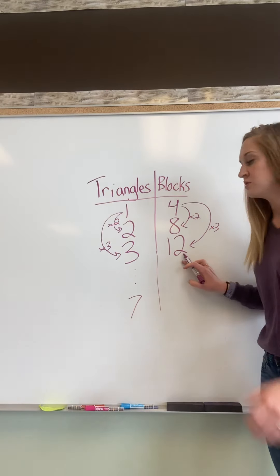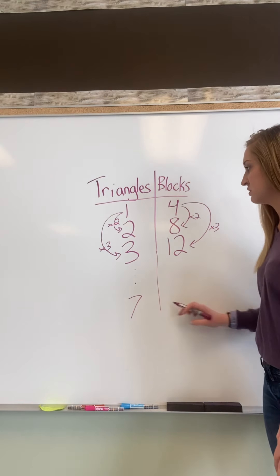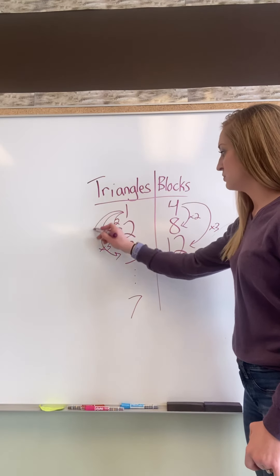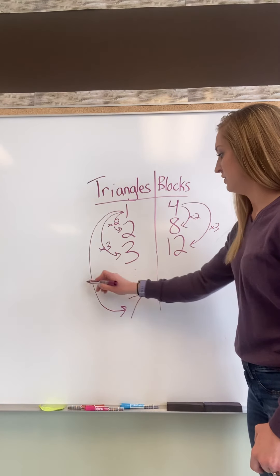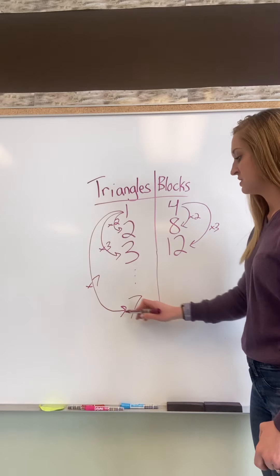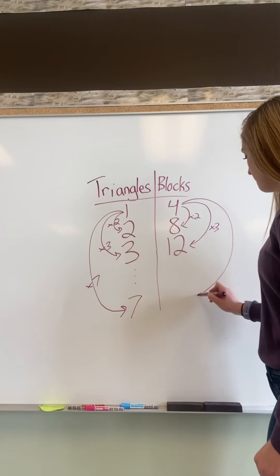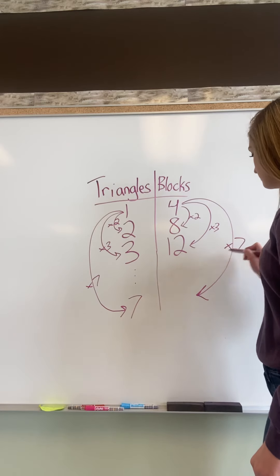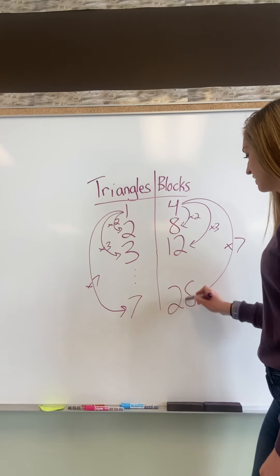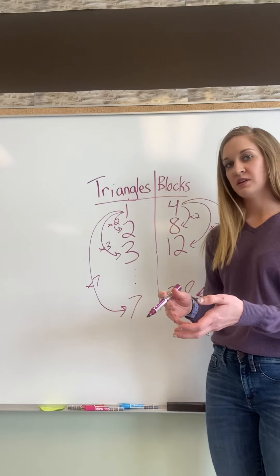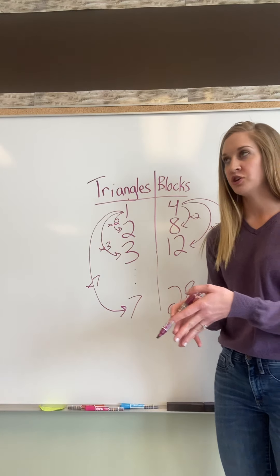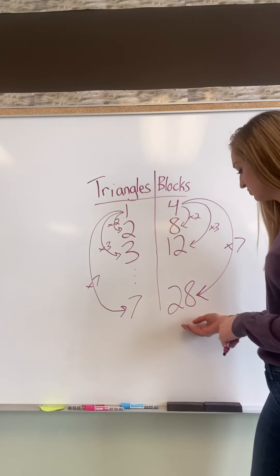So all I have to do here to figure out if I have seven triangles how many blocks I'm going to have is I have to go one multiplied by seven, because one multiplied by seven is seven, and then I would go four multiplied by seven which is twenty-eight. So if I use seven triangles in my structure, I would have to use twenty-eight blocks in total.